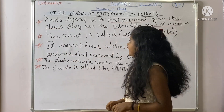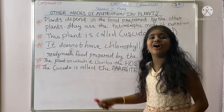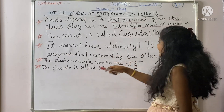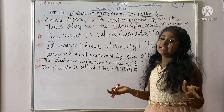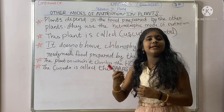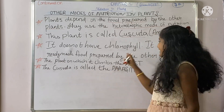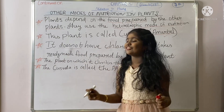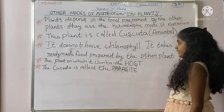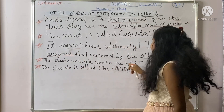Cuscuta does not have chlorophyll, so it takes ready-made food prepared by other plants. Imagine a beautiful apple tree — cuscuta, which looks like a yellow wiry structure, climbs onto this tree and takes nutrients from it. After many years, the tree will die because cuscuta takes so many nutrients from it. The plant on which cuscuta climbs is called the host.